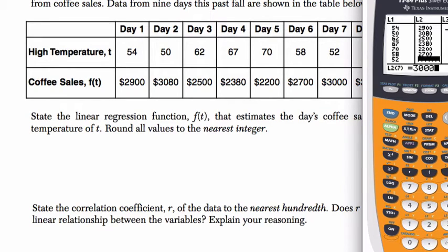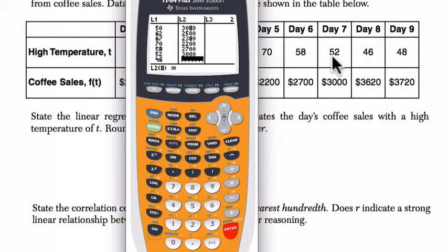52 is 3,000. Sorry, this is really boring. And 46 is 3,620, and last but not least, it's 3,720.